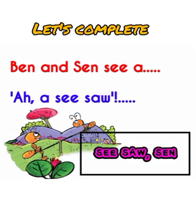Let's complete. Ben and Sen see a dash. "A seesaw!" — who says that? In the box we see the words: seesaw, Sen. Complete these sentences with a suitable word from the box.